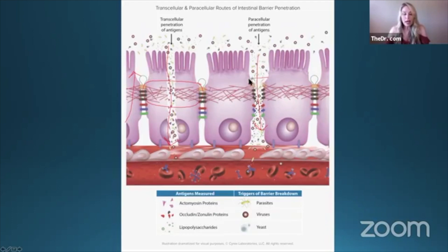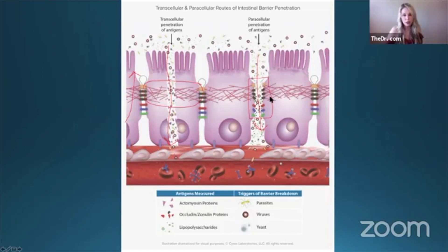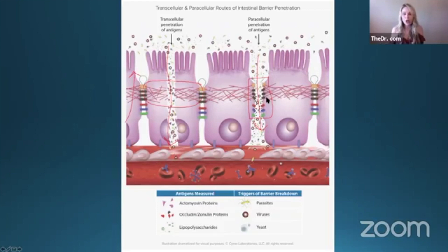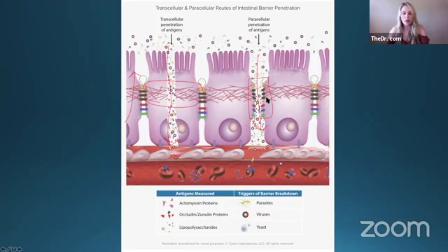We're also looking at antibodies to occludin and zonulin — these tight junctions in between the cells. Also on this test is whole blood zonulin, which has a half-life of anywhere from four and a half minutes to about four hours. So we really like people to do this test fasting, because we don't want it to be artificially elevated because they ate a high-fat diet or a piece of gluten toast that morning — that can artificially elevate that marker.